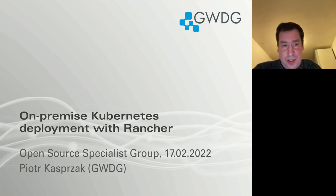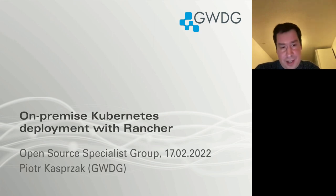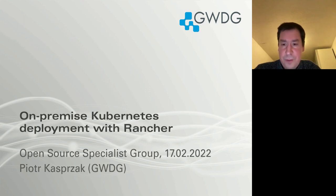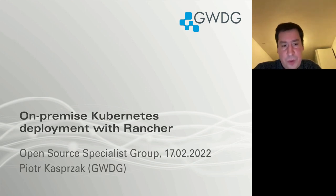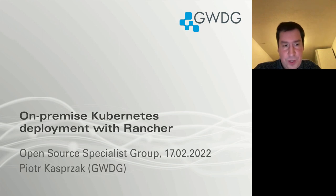My name is Piotr Kastrzak. I'm working at GWDG, which is a data and IT service center for Max Planck Society and the University of Göttingen. Göttingen is in the middle of Germany. I'm working in the infrastructure group there, and we provide all kinds of infrastructure-related services — mostly virtualization, VM-based virtualization, but now also more and more container-based virtualization based on Kubernetes, where we use Rancher as a management platform for the different Kubernetes clusters.